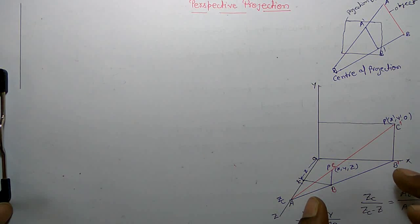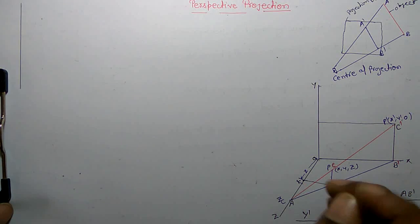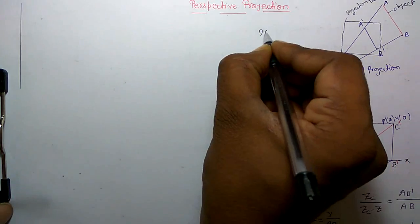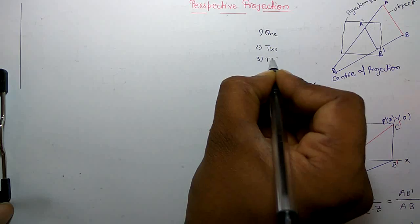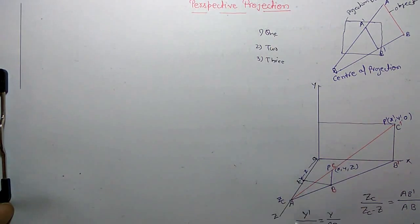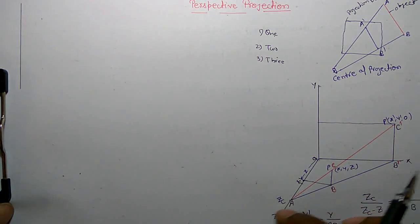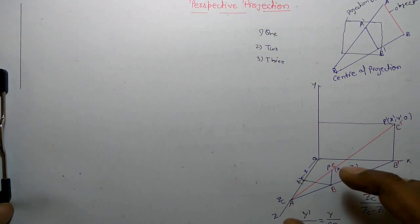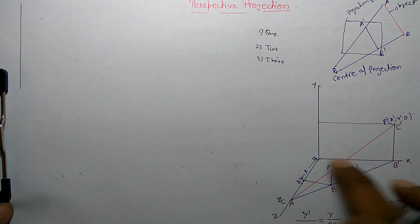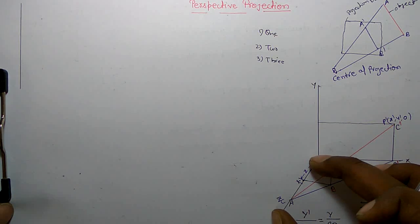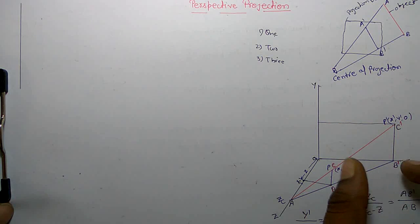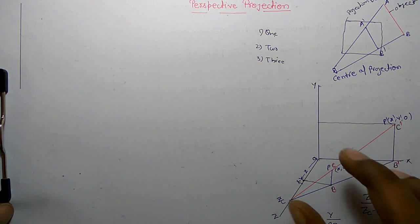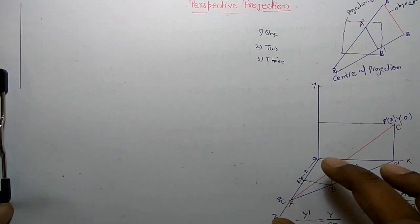This is a single point projection. There are three types of perspective projection: first is one point, second is two point, and third is three point. In one-point projection, the projection plane is perpendicular to one of the principal axes. Here, this projection plane is perpendicular to the z-axis, but it can also be perpendicular to any of the x-axis or y-axis. It should be perpendicular to one principal axis.